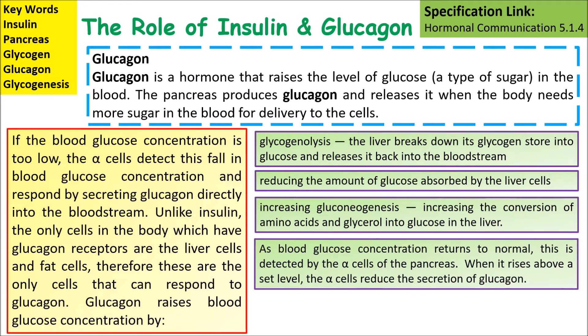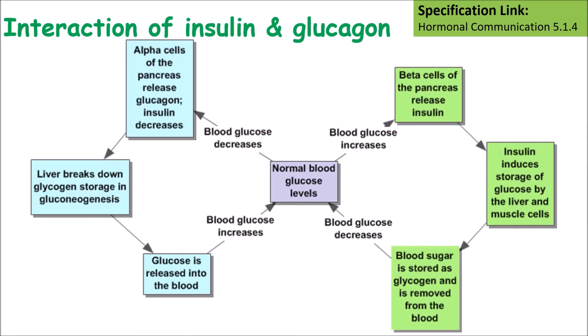As blood glucose concentration returns to normal, this is detected by the alpha cells in the pancreas, and when it rises above a certain level the alpha cells reduce the secretion of glucagon. Looking at the diagram, as blood glucose increases this is detected by the beta cells in the pancreas which release insulin, causing the liver to store more glucose, and therefore blood glucose decreases. If blood glucose decreases, this is detected by alpha cells of the pancreas which release glucagon, so the liver breaks down stored glycogen into glucose which is released back into the bloodstream, increasing blood glucose levels.